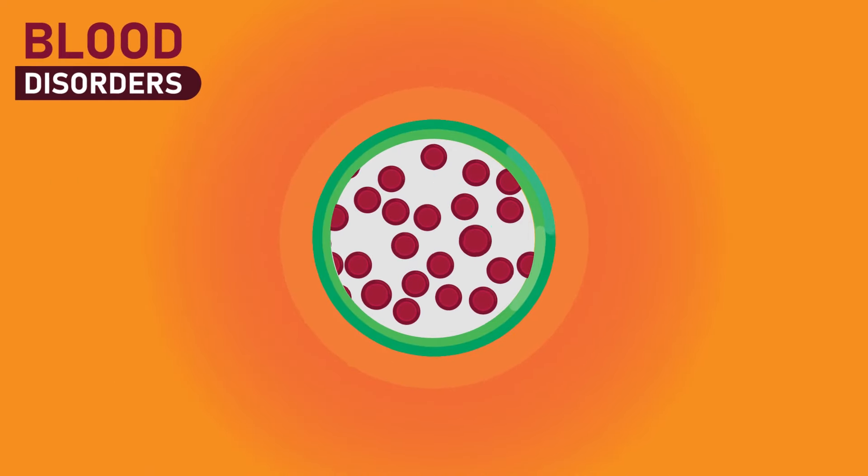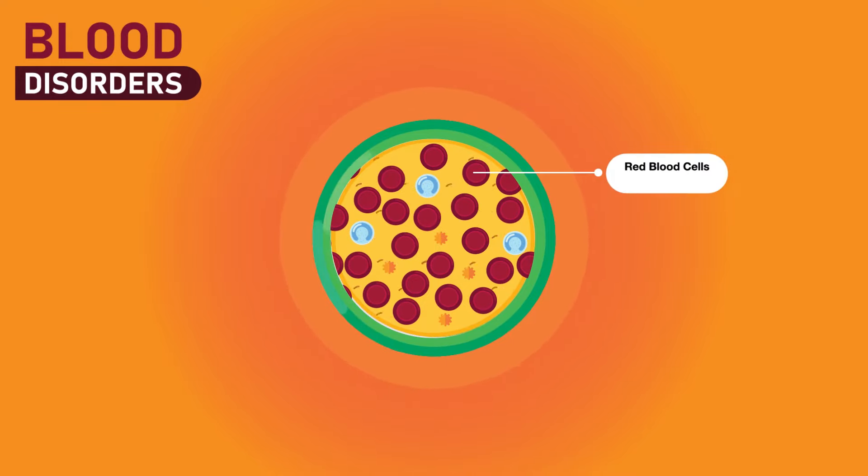In vertebrates, it is composed of blood cells suspended in blood plasma. The blood cells are mainly red blood cells, also called RBCs or erythrocytes, white blood cells, also called WBCs or leukocytes, and platelets.